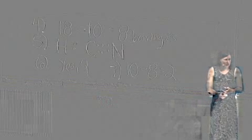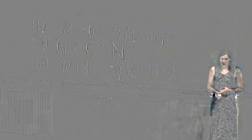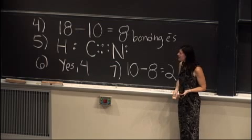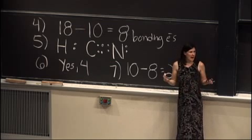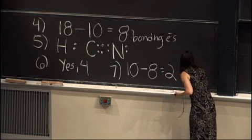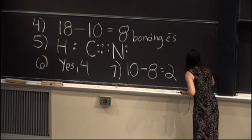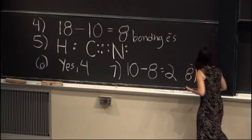Which atom is in need of those lone pair electrons? The nitrogen — the reason being that's the only one that didn't have a full octet yet. So now we're done. Actually, there is one more step, which is to determine the formal charge.